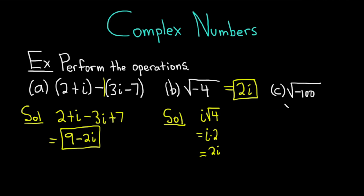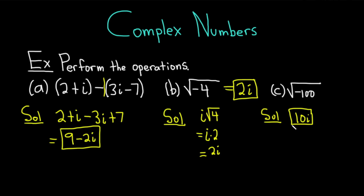To make the point, let's do part c: the square root of negative 100. The square root of 100 is 10, and because you have that negative in the square root, you get 10i. Much, much faster to do problems this way.